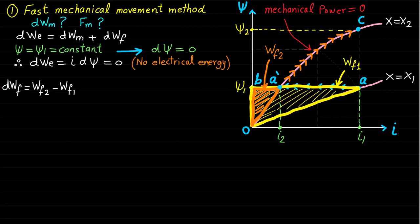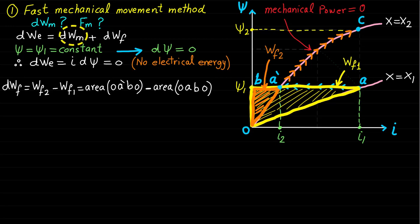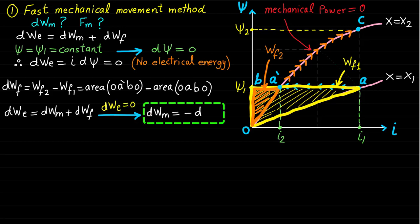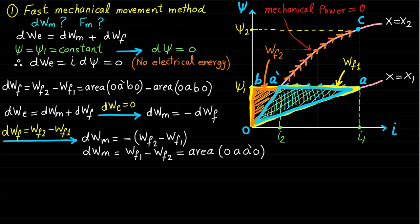The change of field energy DWF equals the area OA-dash-BO minus the area OABO. Since DWE = 0, the change of mechanical energy DWM can be calculated from the balance equation as DWM = −DWF, which equals the blue area OAA-dash-O.